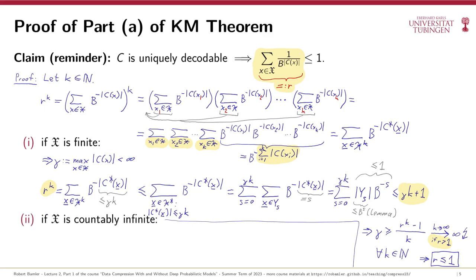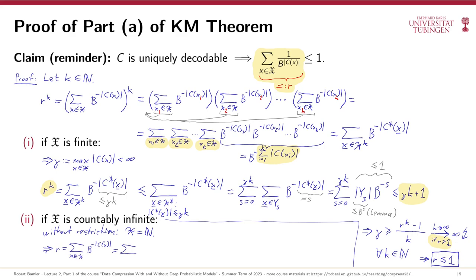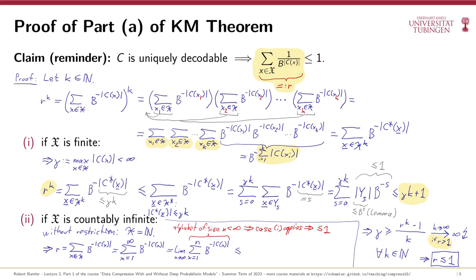What happens if the alphabet is not finite? These arguments don't apply directly because we cannot define a maximum codeword length gamma. But we can reduce to the finite case. Since the alphabet is discrete — either finite or countably infinite — we can assume it is the set of natural numbers N. The sum in r over the alphabet is then a sum from x=1 to infinity, which is formally defined as the limit of finite partial sums from 1 to n as n goes to infinity. For each partial sum we have a finite alphabet, so Case 1 applies and each partial sum is ≤ 1, meaning the limit is also ≤ 1.